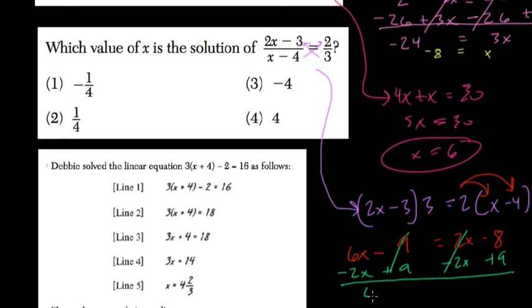6x minus 2x is 4x. Negative 8 plus 9, that's 1. Divide both sides by 4, and x equals 1 divided by 4, or 1 fourth. So that's choice 2.